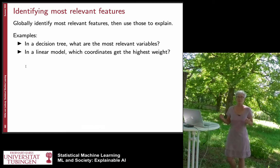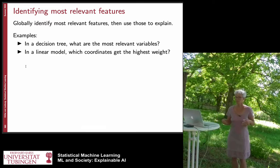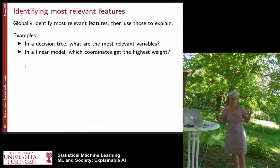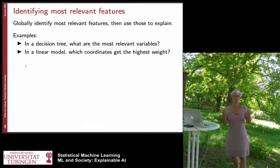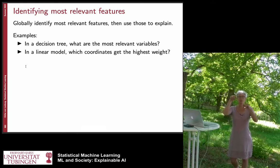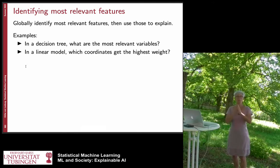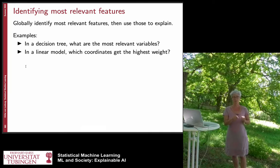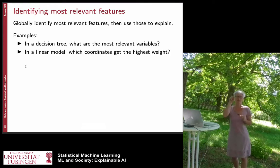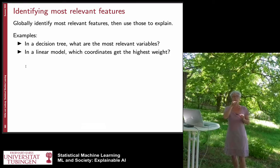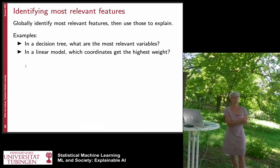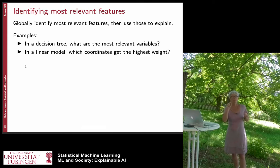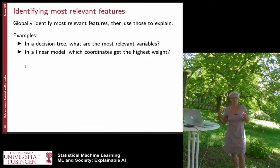Another popular approach is to identify relevant features. In a decision tree, the top nodes typically split on the features most important for the final decision. In a medical example, the first node might split patients into young and elderly, then into low and high blood pressure, and after a few more nodes you reach the diagnosis. The doctor can follow this path and see that for this elderly patient with low blood pressure, it makes sense to recommend this treatment. So you explain the decision by talking about the most important features that made the algorithm decide in this particular way.